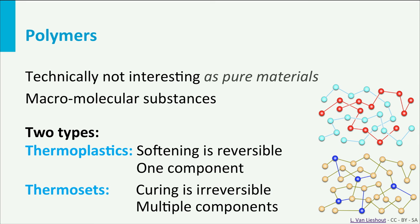Thermoplastic polymers, shown in the picture above, are made of long molecular chains which don't have strong bonds between the chains. The chains are made of one type of monomer. Due to the weak bonds between the chains, the polymer weakens when the temperature increases, and when cooled down, the polymer becomes rigid again. This softening is reversible.